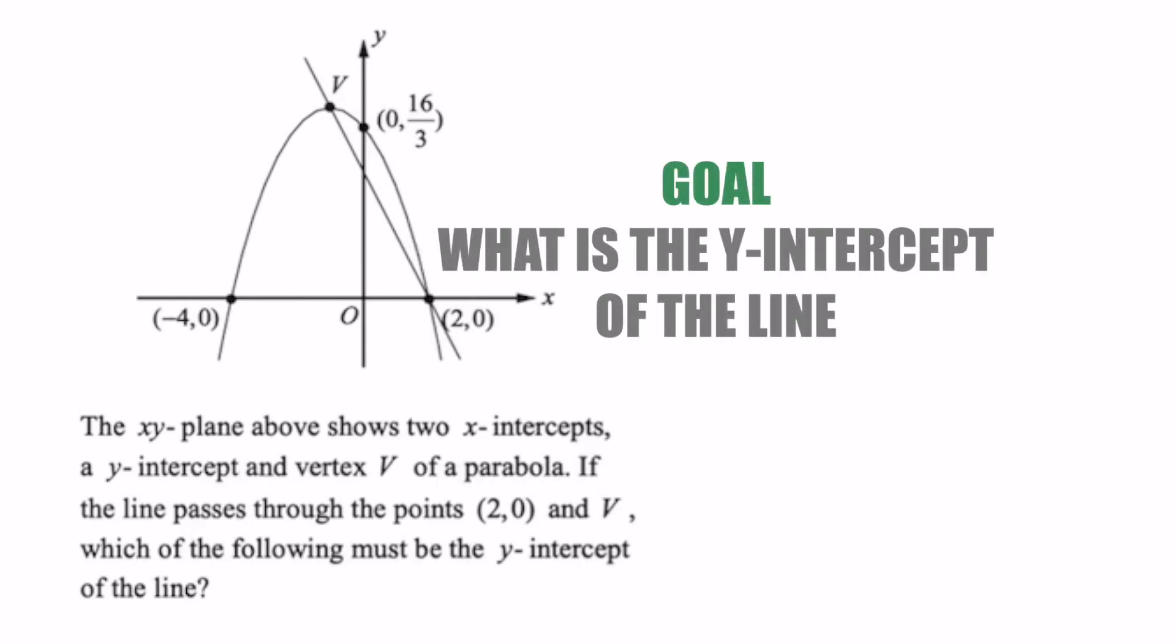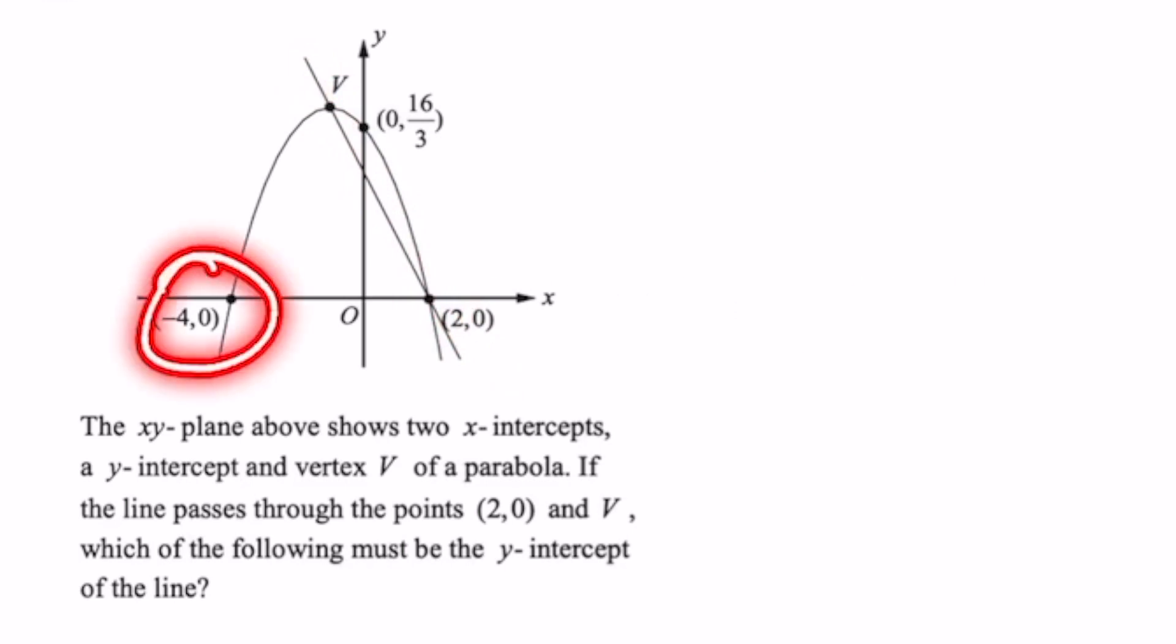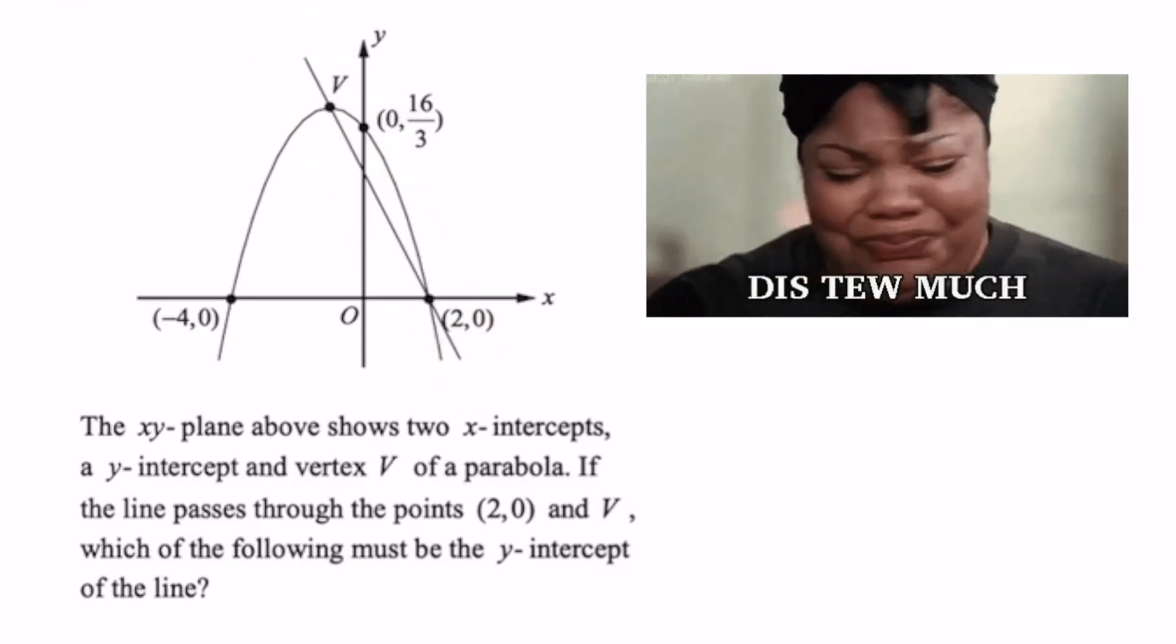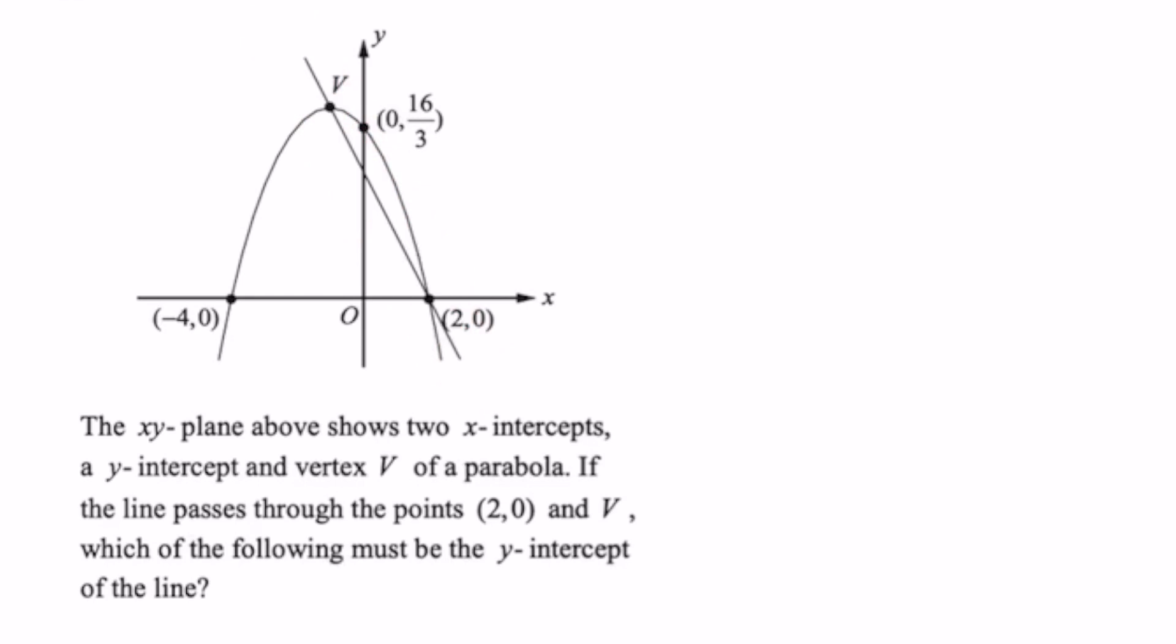In this question, we're trying to find the y-intercept of this line. We're given several pieces of information such as the x-intercepts of the parabola, a point on the parabola, and it also states that this line passes through the parabola twice. The first place to get started is that we need the equation for this quadratic, and we can find that by using the intercept form of a quadratic equation.